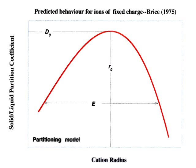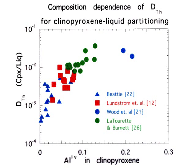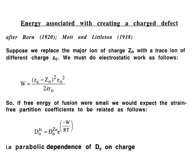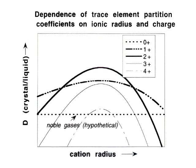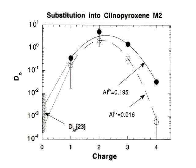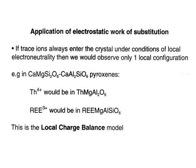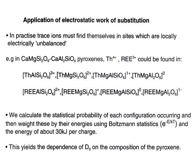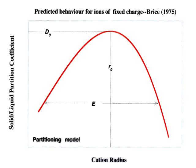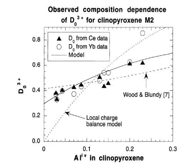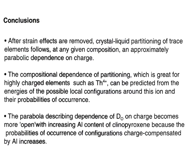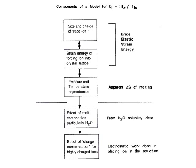In the simplest form of the model, there are three parameters: first, the radius of the site; second, D₀, which is the partition coefficient crystal-over-liquid for the ion which fits perfectly into that site; and E, the apparent Young's modulus of the site. The Young's modulus controls the tightness of the parabola — the higher the Young's modulus, the tighter the parabola. In this model, the elastic properties of the liquid have no influence, since liquids have no shear modulus.